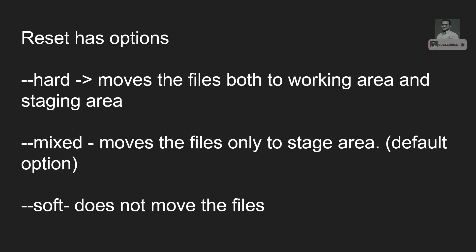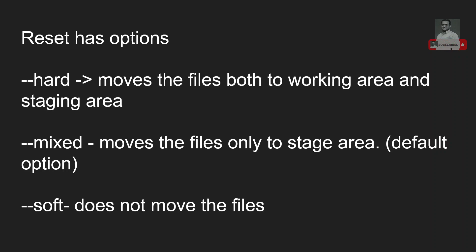Apart from moving the branch, reset has some optional flags. The first is --hard: when you use git reset --hard, whatever files are present in the repository area will be moved to both the working area and the staging area. The default option is --mixed: it moves the files from the repository area only to the staging area, not to the working area.